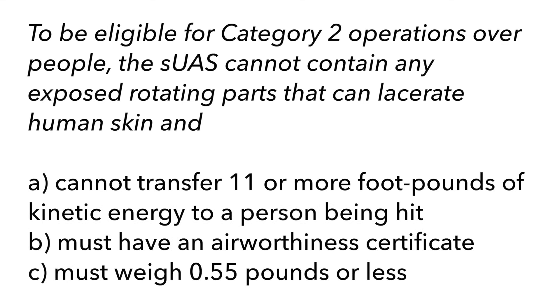This next question has to do with operations over people — the four categories. The FAA is asking more and more about this topic. To be eligible for Category 2 operations over people, the SUAS cannot contain any exposed rotating parts that could lacerate human skin and cannot transfer 11 or more foot-pounds of kinetic energy to a person being hit. It must have an airworthiness certificate, or must weigh 0.55 pounds or less. This question tests your process of elimination skills, which is one of my top five tips for taking an FAA test.